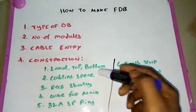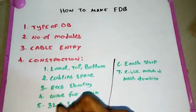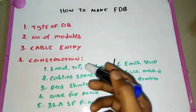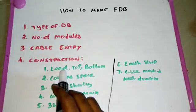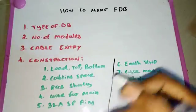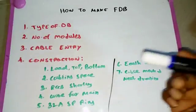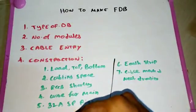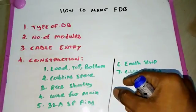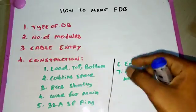When constructing the DB, the first factor is the load. Based on the load, we decide whether to place the breaker at the top or bottom. For example, lighting loads are mostly at the top, so the lighting breakers should be placed at the top. Socket breakers should be placed at the bottom. This determines the arrangement of breakers in the DB.